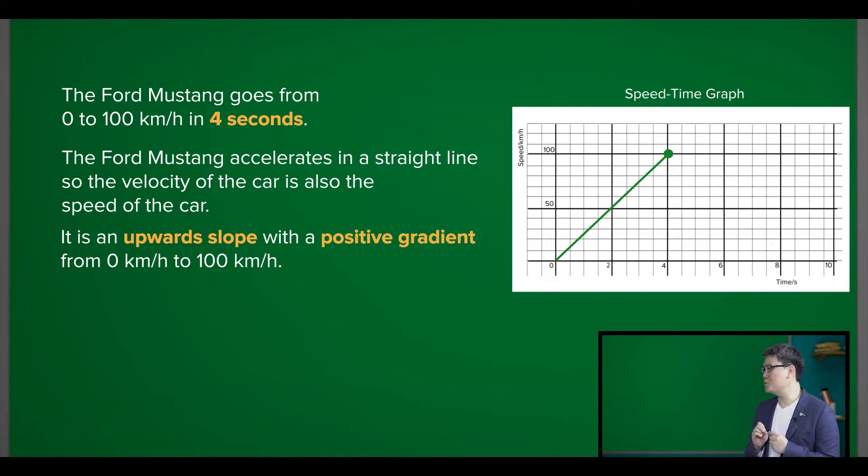Let's also assume that the Ford stops accelerating and continues driving at 100 km per hour for a while. We can now get the graph as shown here.